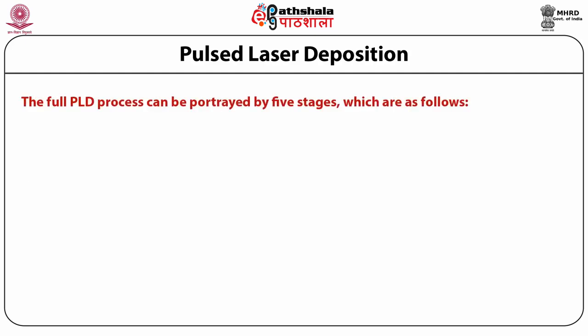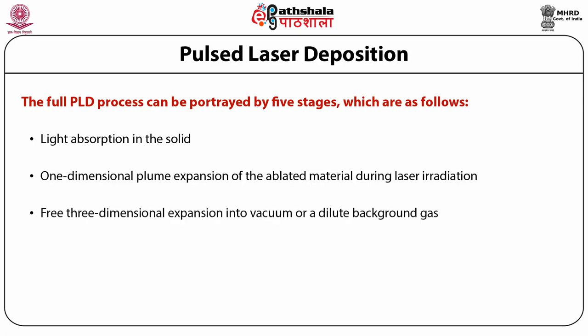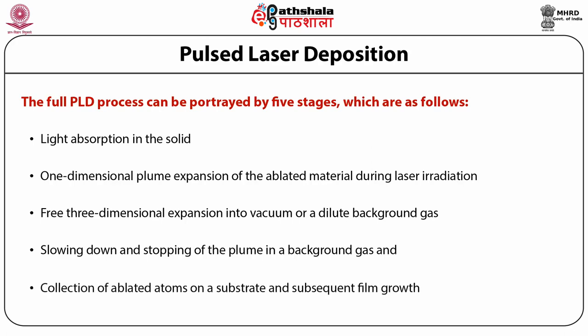The full PLD process can be described by five stages. The first stage is light absorption in the solid. The second is one-dimensional plume expansion of the ablated material during laser irradiation. Third is free three-dimensional expansion into vacuum or a dilute background gas. Fourth is the slowing down and stopping of the plume in the background gas. The fifth stage is the collection of ablated atoms on a substrate and subsequent film growth.